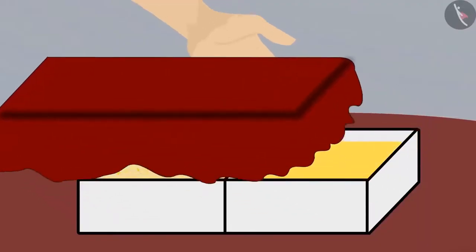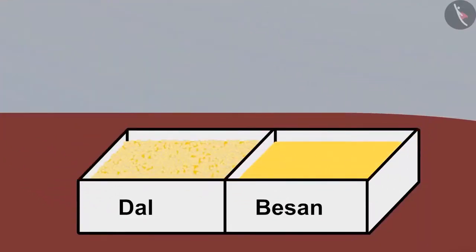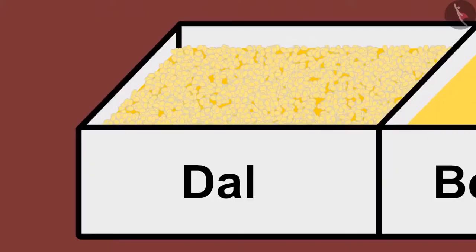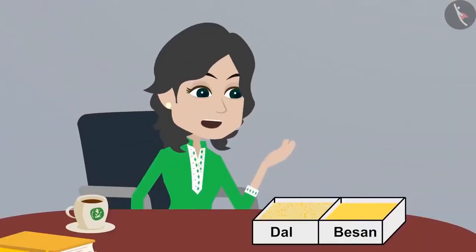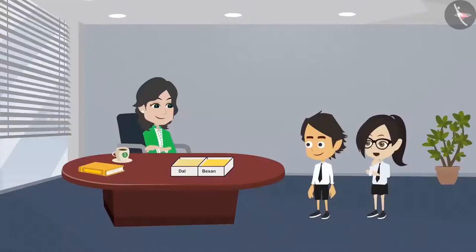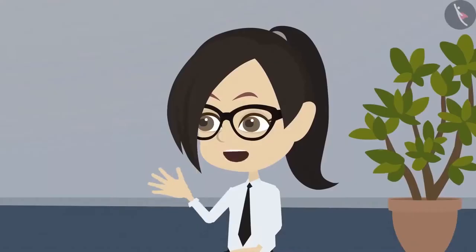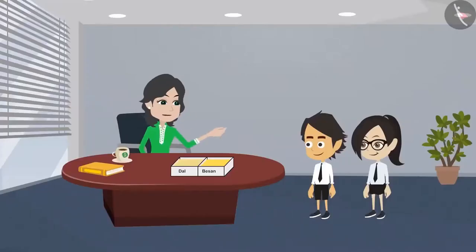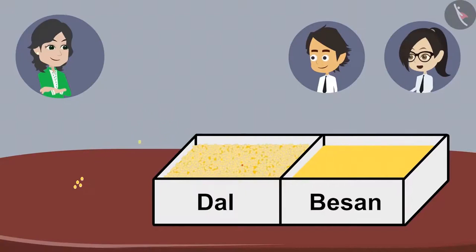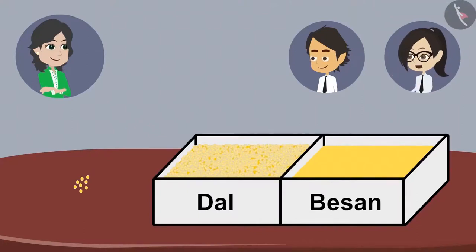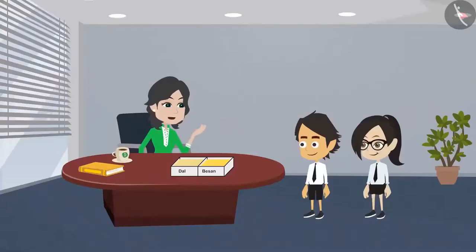Then show them to us, madam. Look, Vandana, I have kept those objects here. What is there in these boxes? Dal and besan. Tell me, how will you divide dal and besan into two equal parts? We can divide dal into two parts because we can count dal. Okay, please try. I will start counting — one, two, three, four, five, six, seven, eight. This pile is huge. By the time I finish, it will be late in the evening. This is not the right way to measure dal.